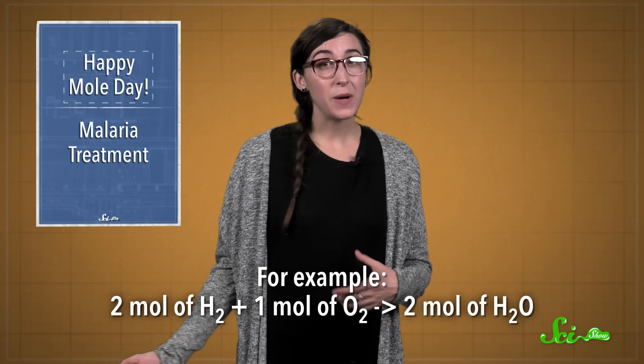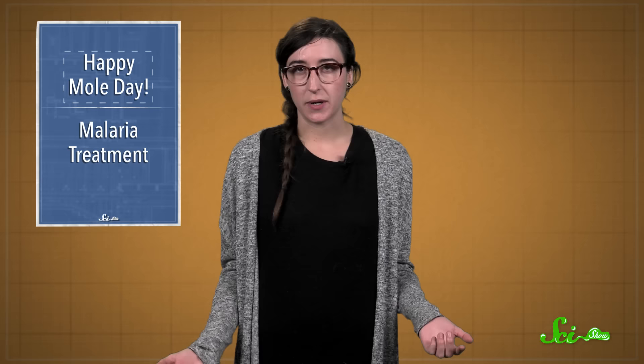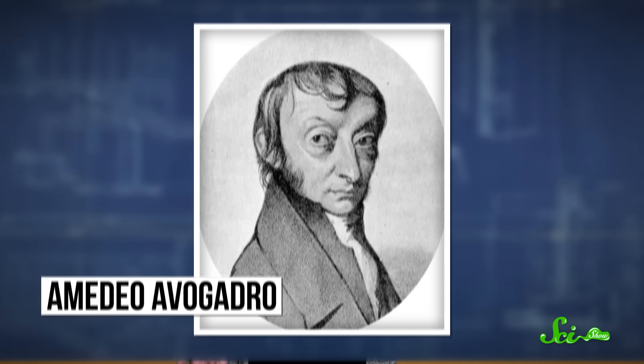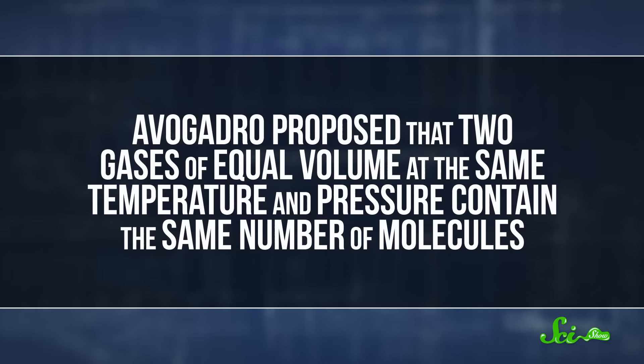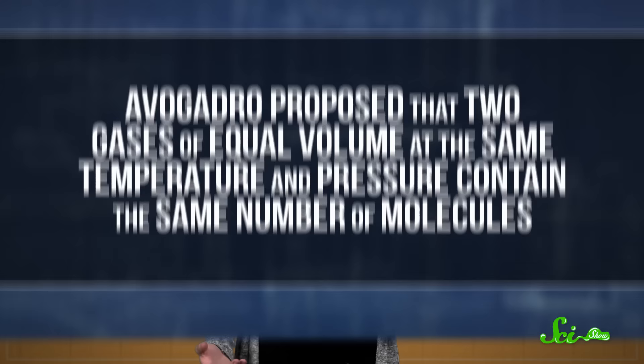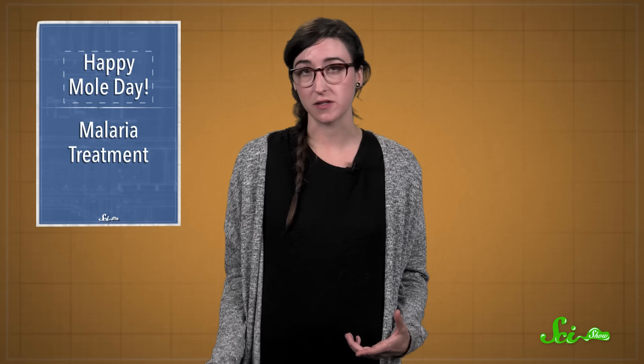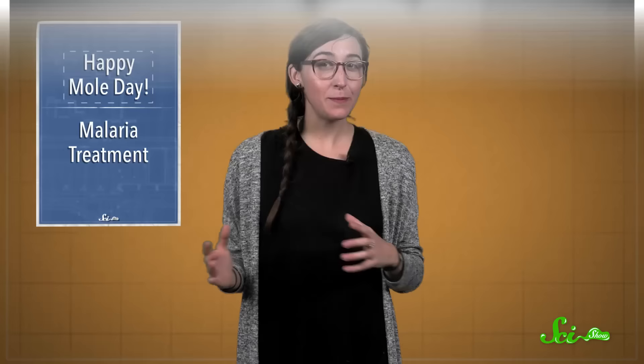But you might be wondering, how did Avogadro come up with such a number? He didn't, actually. The Italian scientist Amadeo Avogadro described what we now call Avogadro's Law in the early 1800s. He proposed that two gases of equal volume at the same temperature and pressure contain the same number of molecules. But he didn't have a way to count them and prove his hypothesis. That came around a hundred years later, long after Avogadro had gone to that great Bunsen burner in the sky.